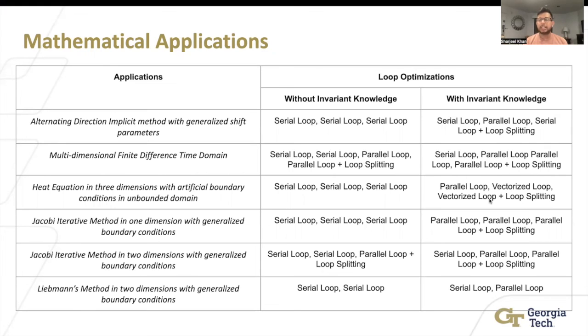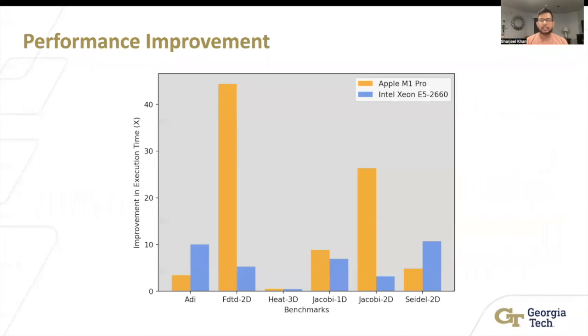And so you can see that here, the best case is this FDTD 2D, got a 40x improvement on Apple Pro. And Jacobi 2D got about 25, I think, improvement. But we should also notice that this one benchmark, Heat 3D, which did not get a huge improvement. And the reason why is that by giving it invariants, it did a lot of loop splitting. The duration of the parallelism is so short that it's not beneficial to do all the loop splitting.